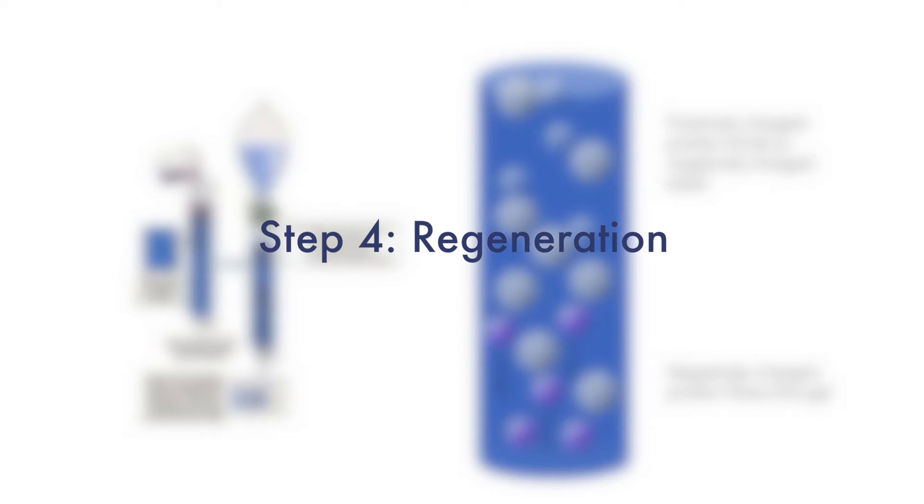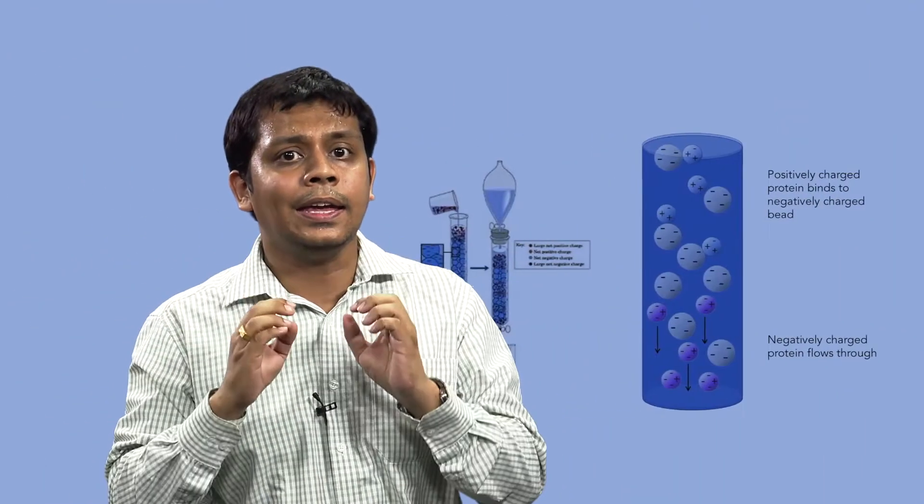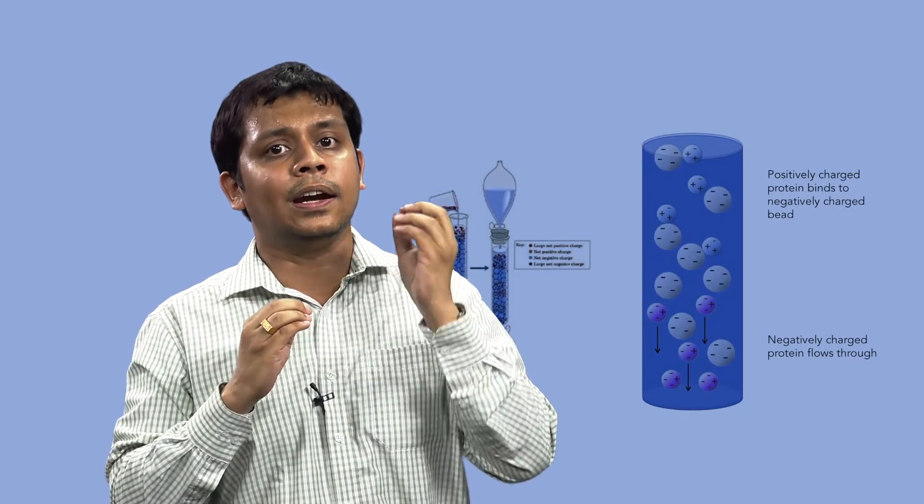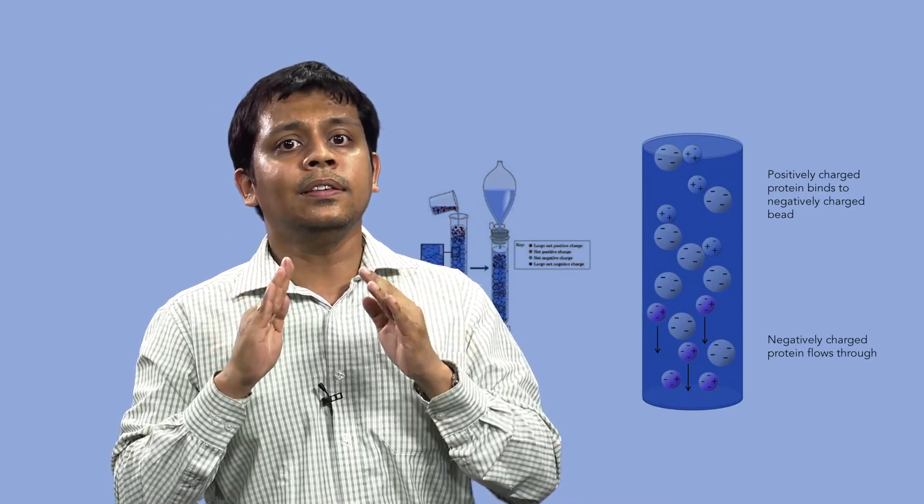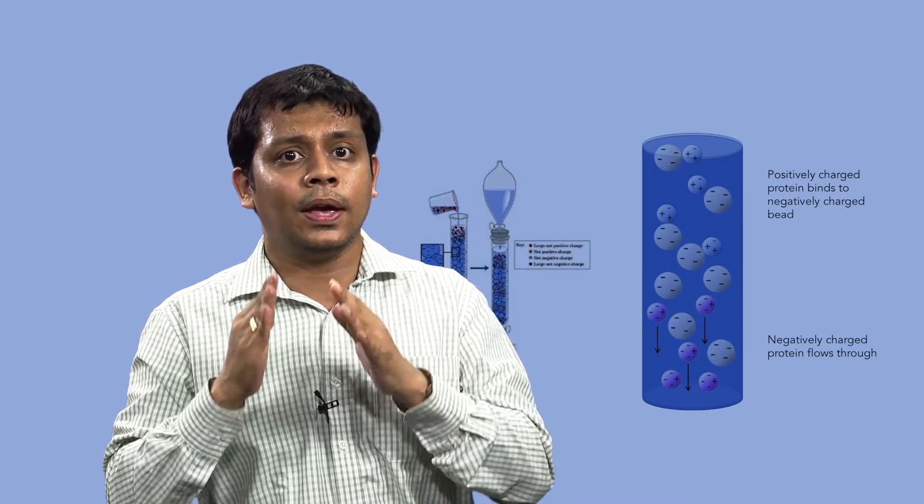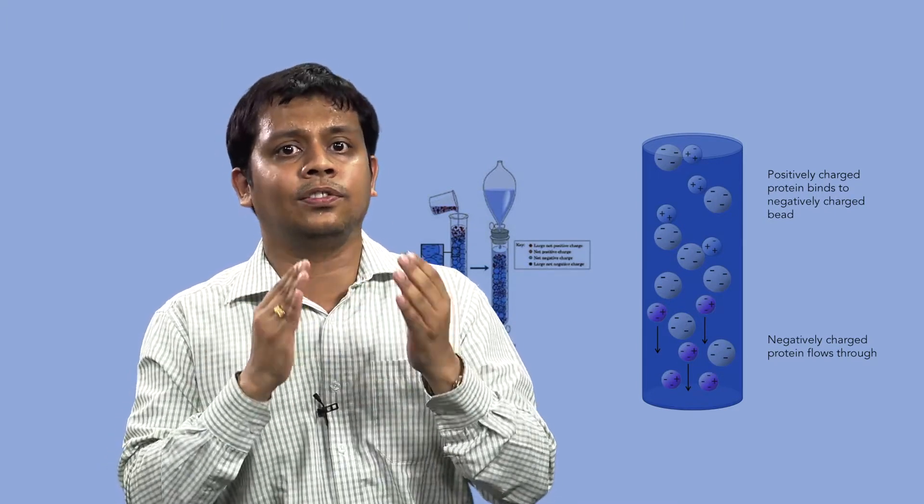Step 4: Regeneration. A final wash with high ionic strength buffer regenerates the column and removes any molecules still bound. This ensures that the full capacity of the stationary phase is available for the next run.